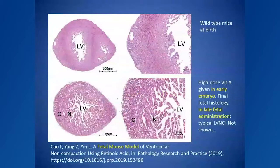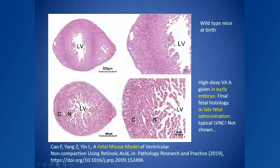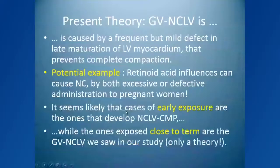A final point: why is there such dramatic incidence of non-compaction in the general population? This may be the reason — experiments in mice using retinoic acid, or vitamin A, given in excessive dosage to an embryo. Either too low or too high vitamin A in the body affects compaction of the left ventricle, causing severe non-compaction. It is possible that excessive vitamin A administration — and potentially many other environmental insults — can cause a late fetal disturbance in the compaction process, producing the benign variety of non-compaction.